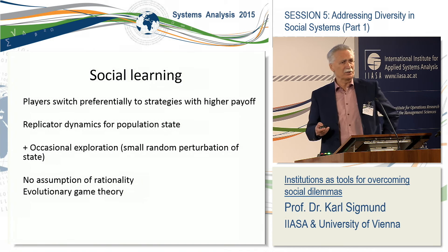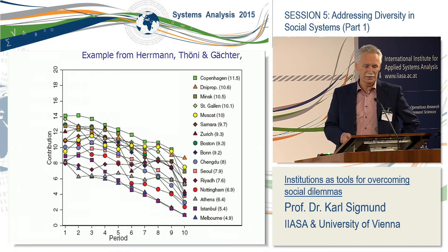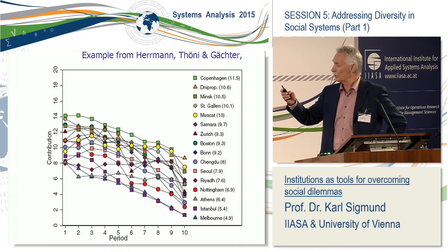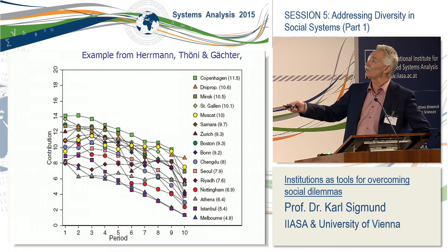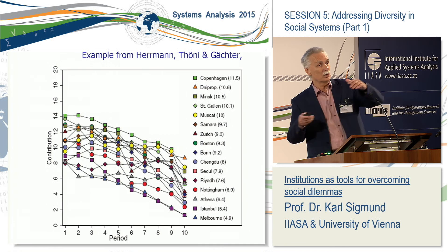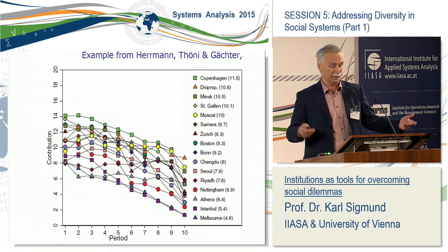There are famous experiments on these public good games. The one I like best is by Herrmann, Töni, and Gächter, who did these experiments for several rounds — one, two, three, four, five, ten rounds — in many different regions. I don't want to go into the fascinating details and differences here, but you see the overall trend: social learning leads to less and less contributions. Players see that others in their group who are free riding are doing better, and they imitate them.